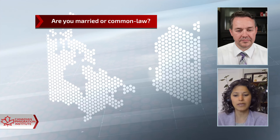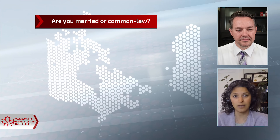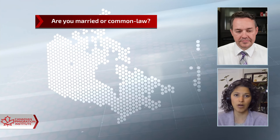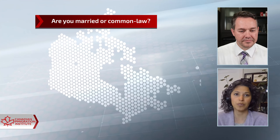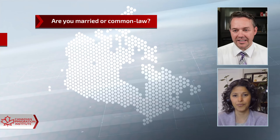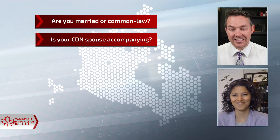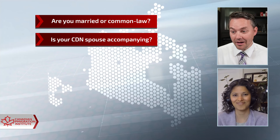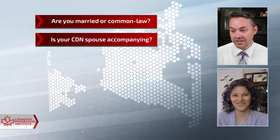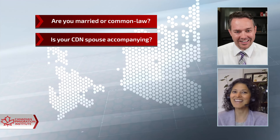So if you've been together with somebody already for 12 months who's a Canadian citizen or permanent resident, then yes, you would say you are in a common law relationship with a Canadian. Next topic: is your Canadian spouse accompanying or non-accompanying when you're trying to set up your Express Entry profile? Well, they're here in Canada, so clearly they're accompanying, right?